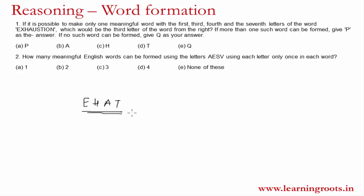You have to find how many words can be formed from these letters, and they must be meaningful English words. There are 24 combinations possible in total, but you cannot write all 24 down. The question is easy because if more than one word can be formed, you mark P. One word that is easy to see is H-E-A-T — heat — since H, E, A, T are all present.